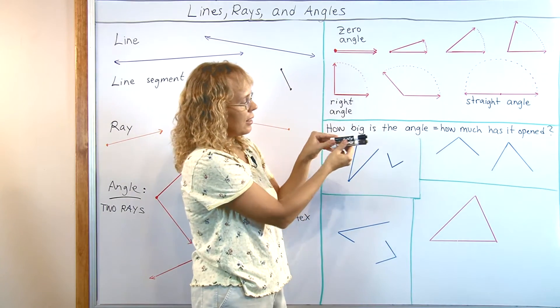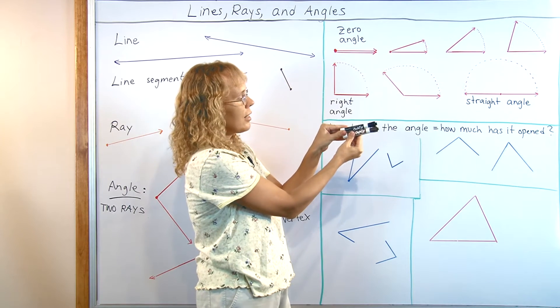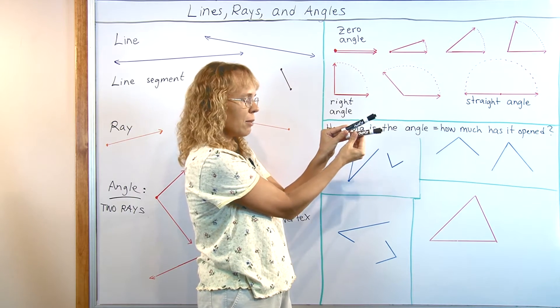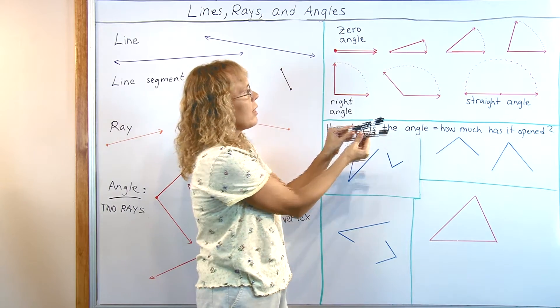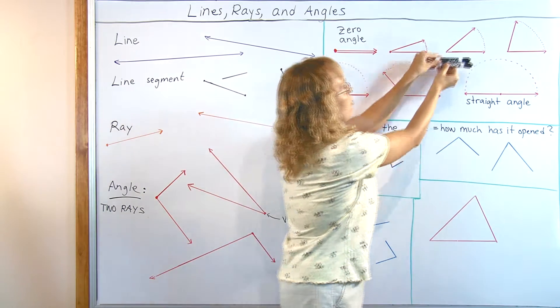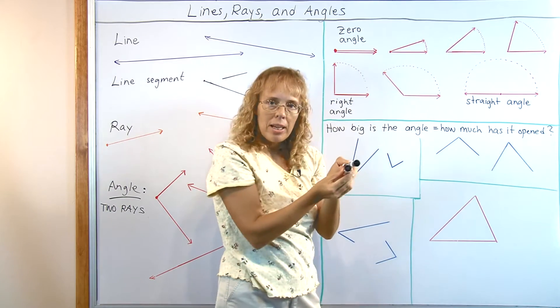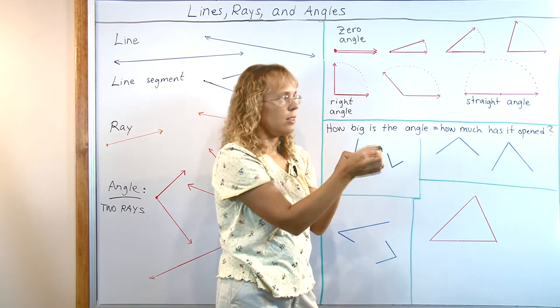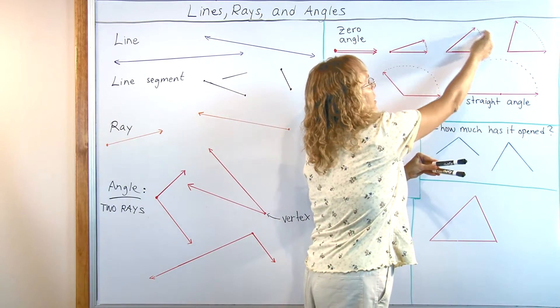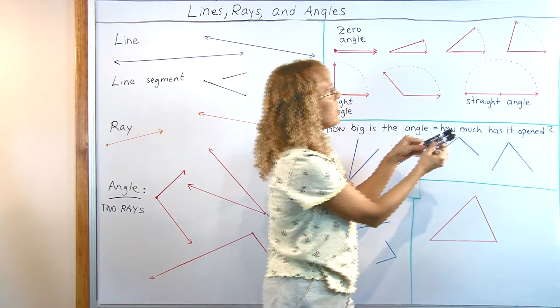And then, if you imagine these two being the rays starting at the same point, let's say that I open up my angle a little bit. Here is a little angle. Then I can open it some more, open the angle a little bigger. And imagine that the end of this is tracing a circle. Just like here, as it is opening, it traces a circle.